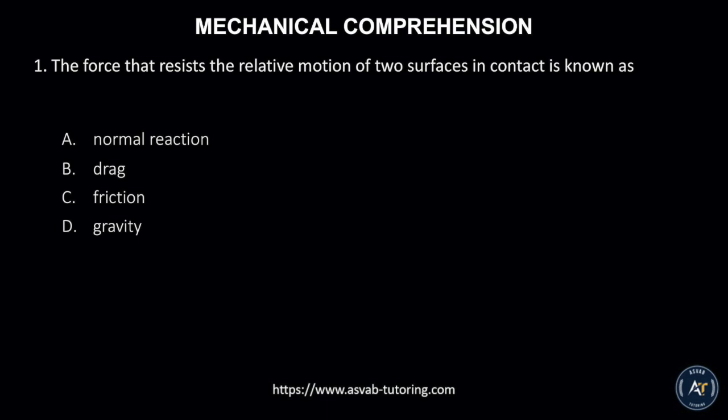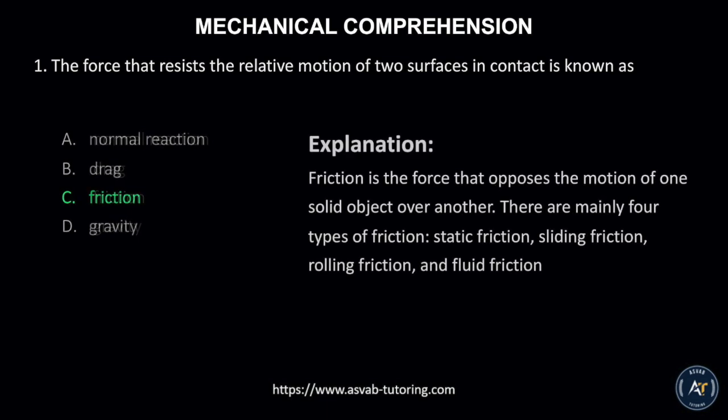Number 1. The force that resists the relative motion of two surfaces in contact is known as? A. Normal reaction, B. Drag, C. Friction, or D. Gravity. The correct answer is C. Friction. This is because friction is the force that opposes the motion of one solid object over another. There are mainly four types of friction: static friction, sliding friction, rolling friction, and fluid friction.